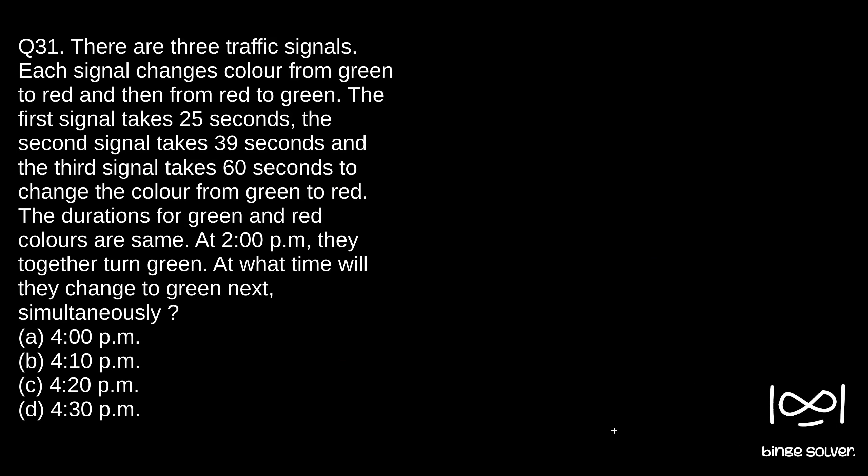Next question, question 31. There are three traffic signals. Each signal changes color from green to red and then from red to green. The first signal takes 25 seconds, the second signal takes 39 seconds, and the third signal takes 60 seconds to change the color from green to red. The durations for green and red colors are the same. At 2 p.m. they together turn green. At what time will they change to green next simultaneously?